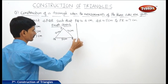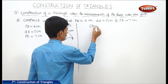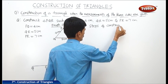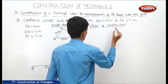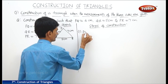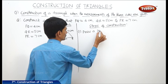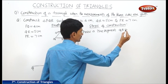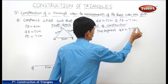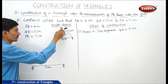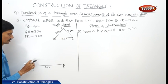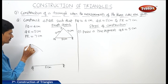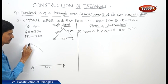Now we will write the steps of construction. Step 1: Draw a line segment QR equal to 5 centimeters. As the point P is 4 centimeters away from point Q, we take Q as center and 4 centimeters as radius, and draw an arc.